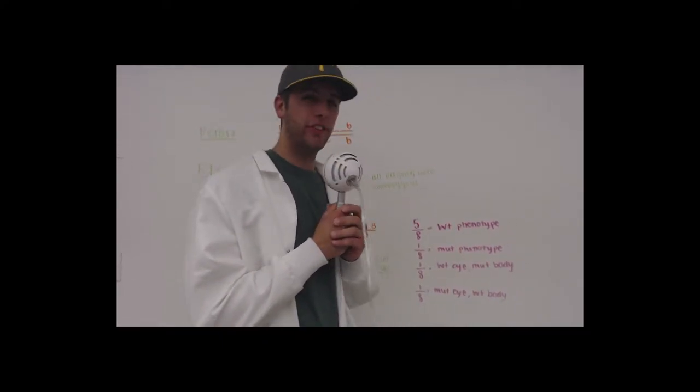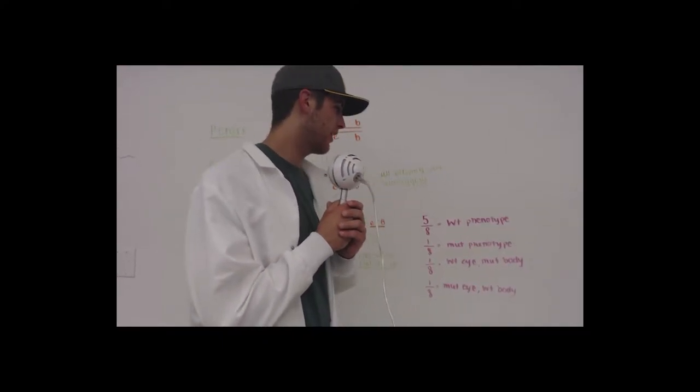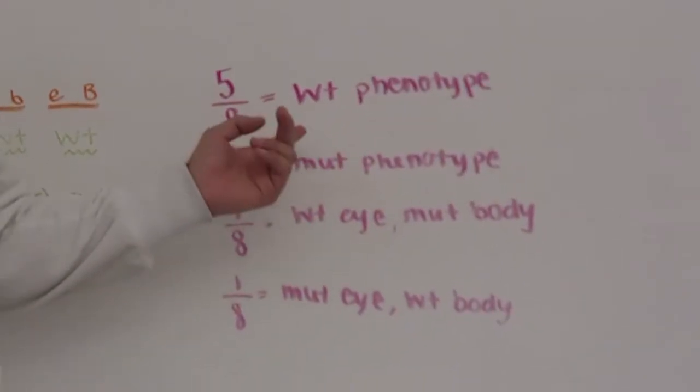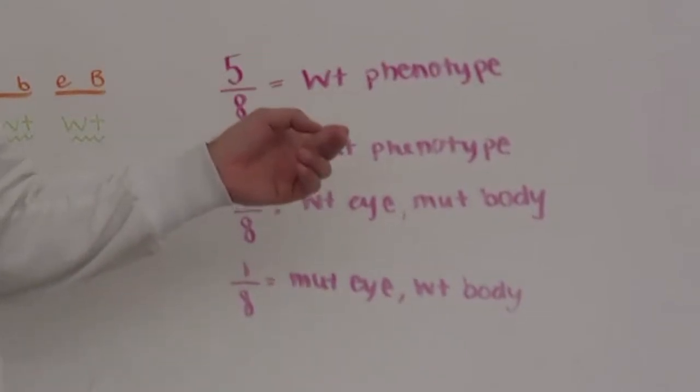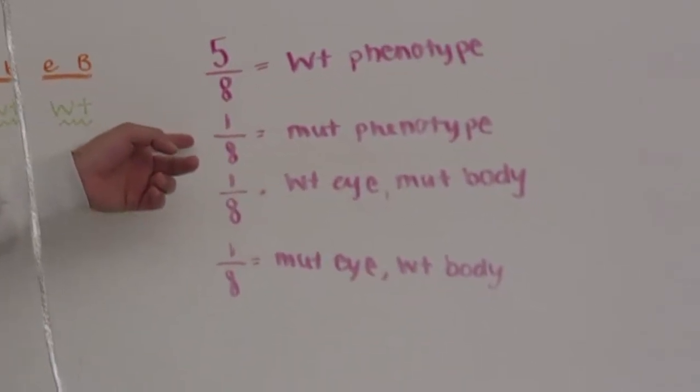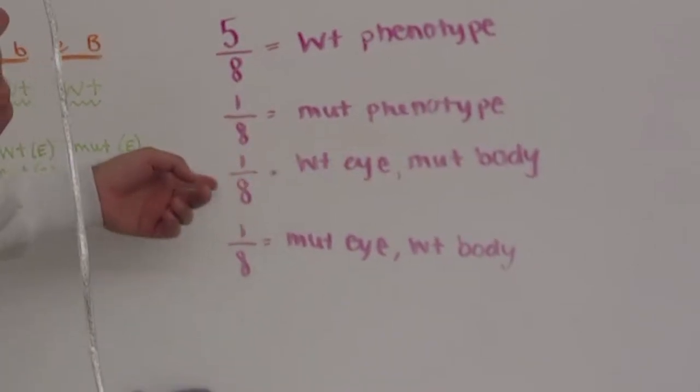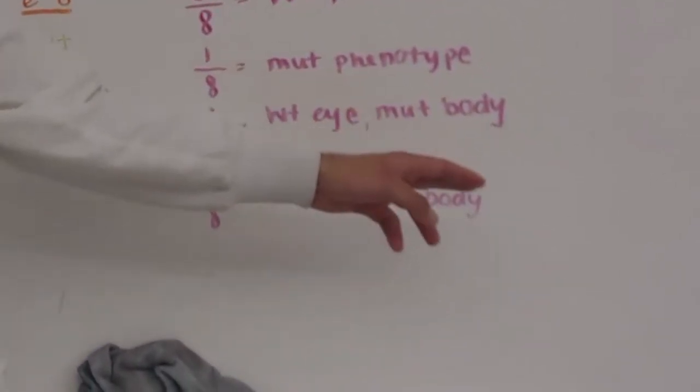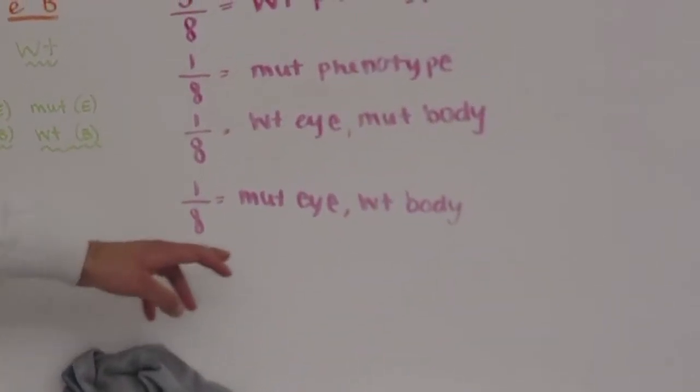So I guess I must explain your new ratios. So going off what Marifino said, our official new ratios are five-eighths wild type phenotype, which is the light eye light body red eye, one-eighth mutant phenotype dark eye dark body, one-eighth wild type eye red and mutant body dark, and one-eighth mutant eye dark and wild type body light.